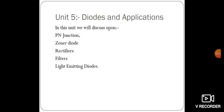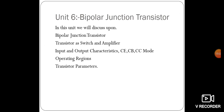In Unit 5 on diodes and applications, we will understand the P-N junction, Zener diode, rectifiers, filters, and light emitting diodes (LEDs). We will look at what a diode is, how the P-N junction works, what a Zener diode is, how a rectifier is connected to convert AC to DC, different types of filters, and LEDs.